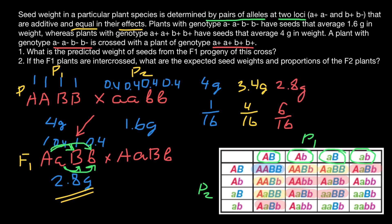Genotypes with one dominant allele and three recessive alleles appear four times out of 16. One dominant allele contributes 1 gram and three recessive alleles contribute 3 × 0.4 = 1.2 grams, giving a seed weight of 2.2 grams. The frequency is 4/16.